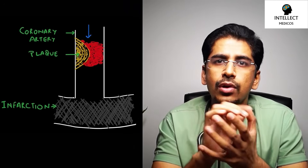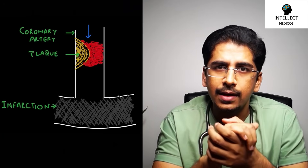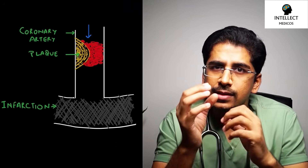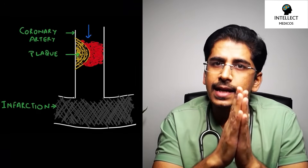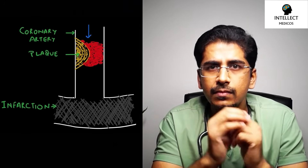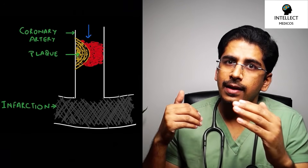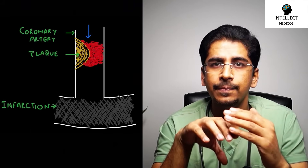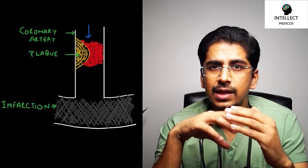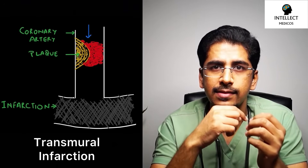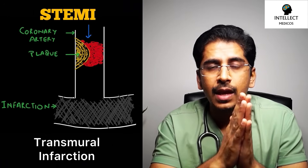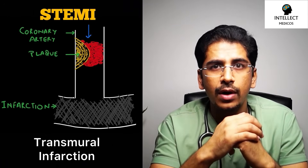The third entity is STEMI, where there is full occlusion of the coronary arteries. When a plaque ruptures or fissures, platelets accumulate at the site, causing complete occlusion. With no blood flow to the distal part, the entire muscle becomes infarcted. This is called transmural infarction — involving all layers. Due to the complete tissue loss, there is intense release of cardiac biomarkers, mainly troponins.